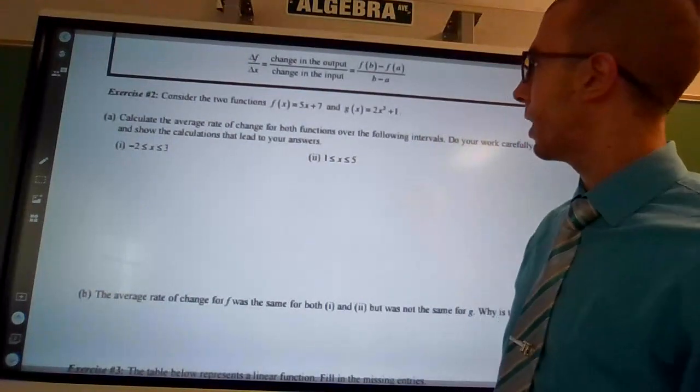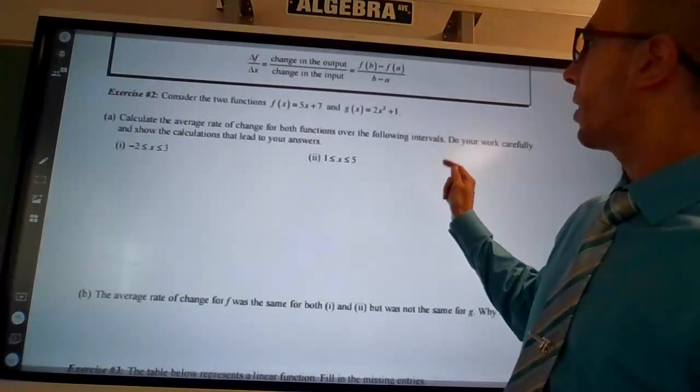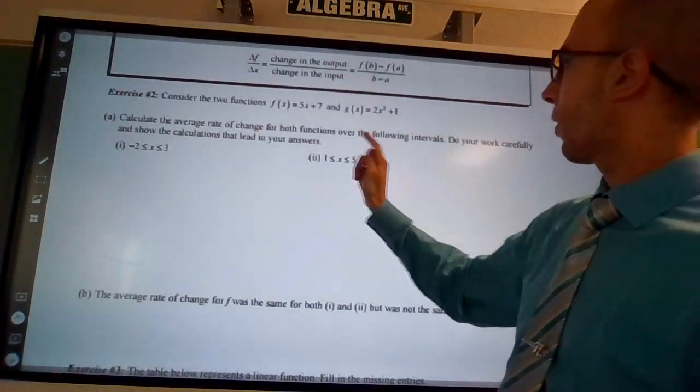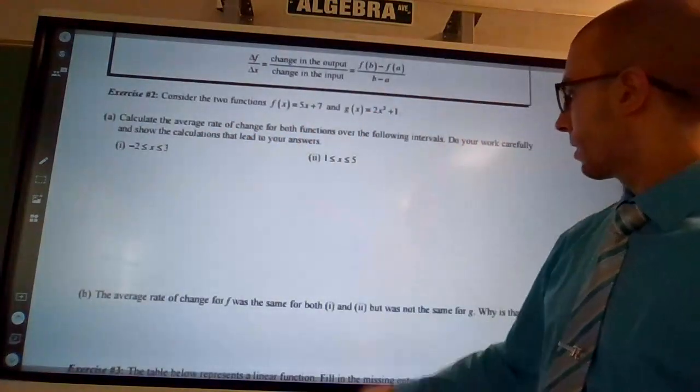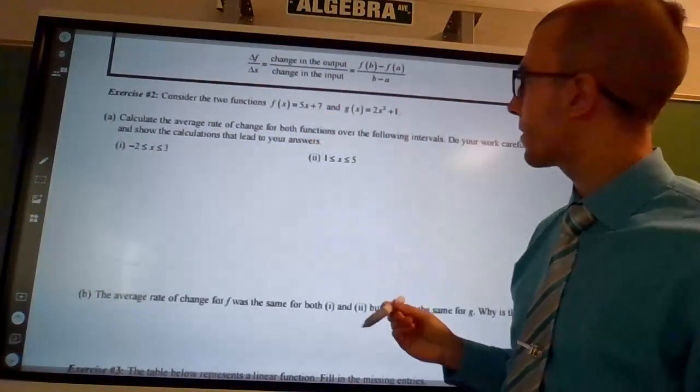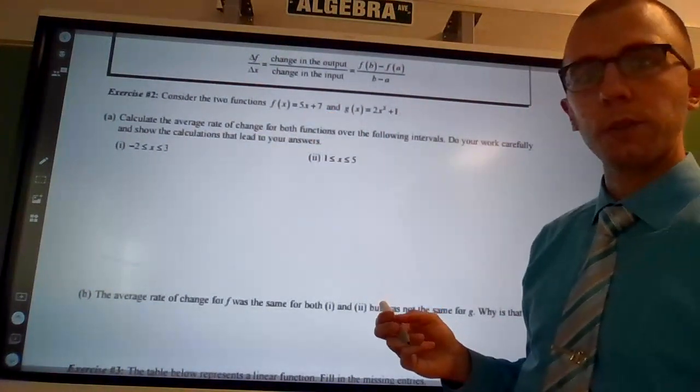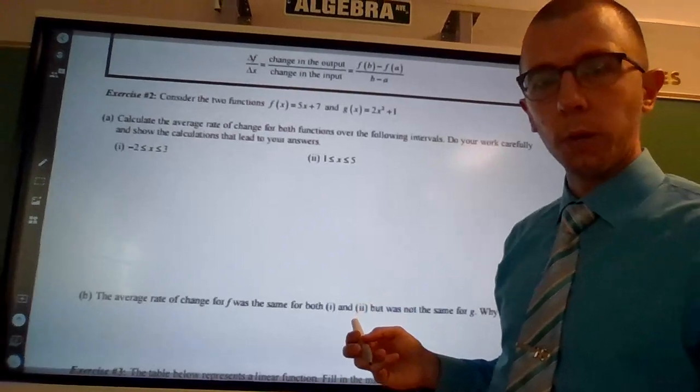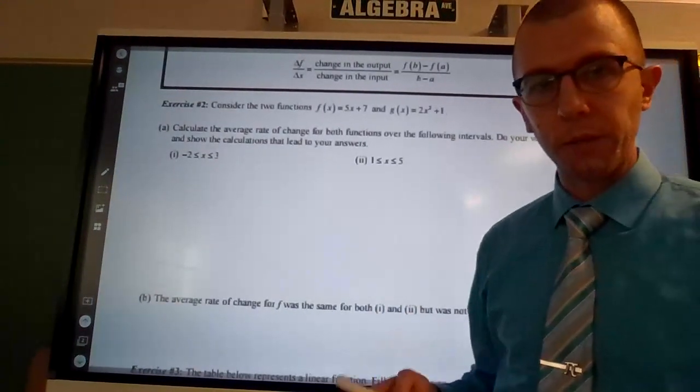So again, we're on page 82 here, finding the average rate of change for both of these functions over these intervals. We have f of x equals 5x plus 7 and g of x equals 2x squared plus 1. So we're given these domain intervals, these x intervals.